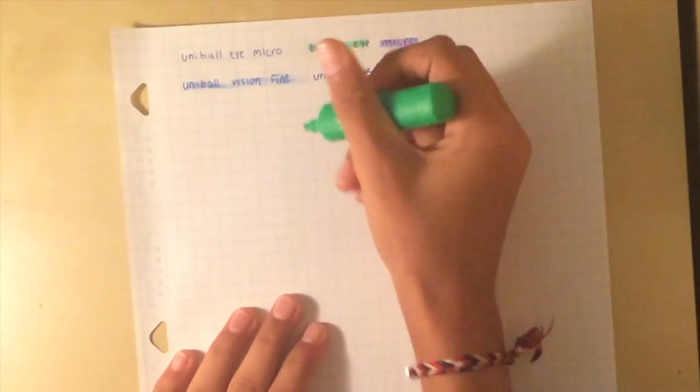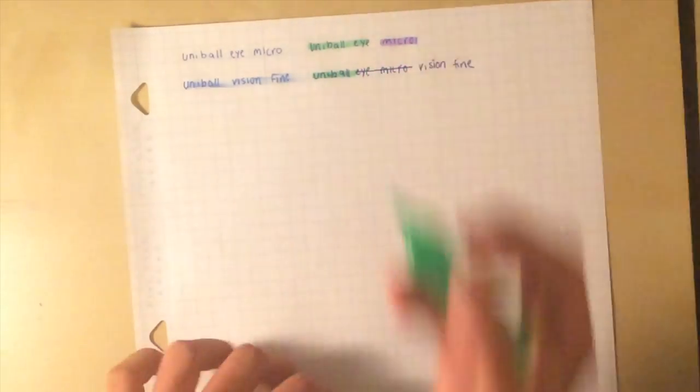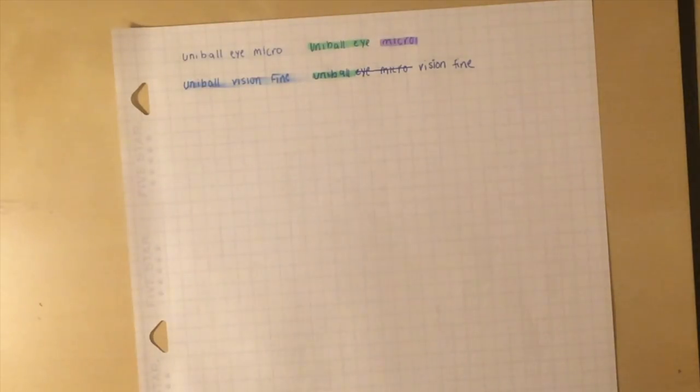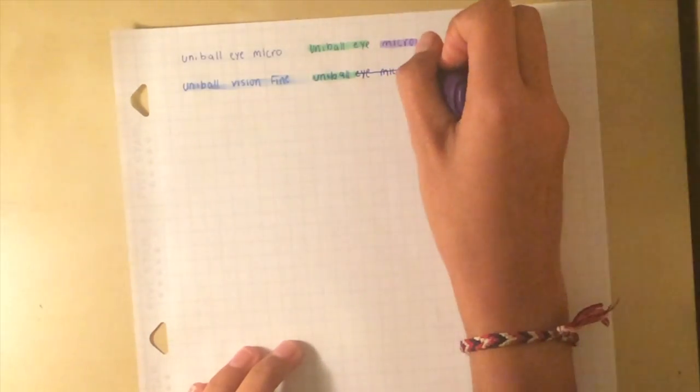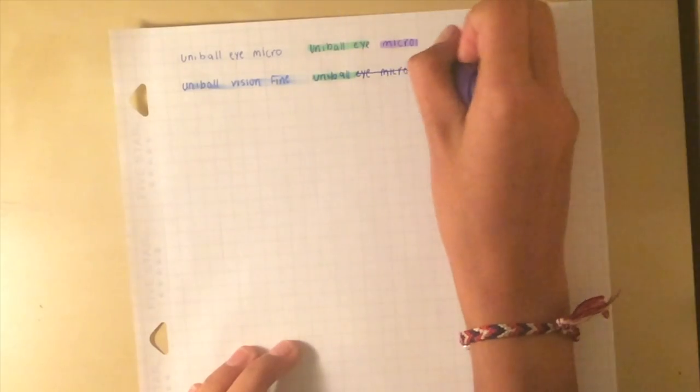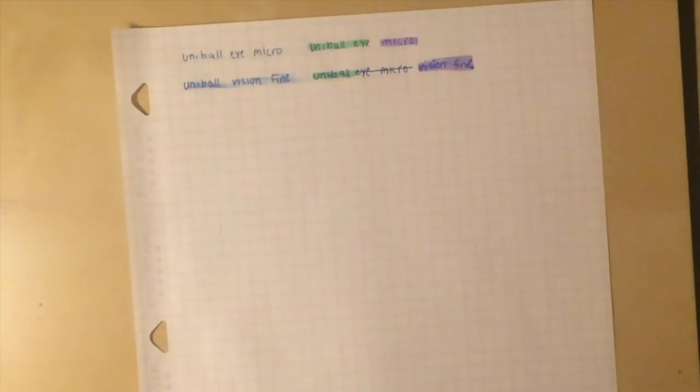So let's try the green. You can see there's some slight smearing. The words are kind of blurry compared to the Uniball Eye. But overall you can read the word well.